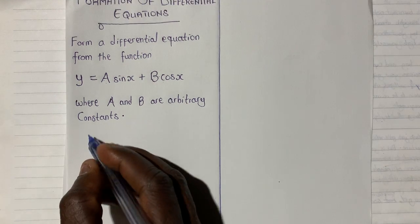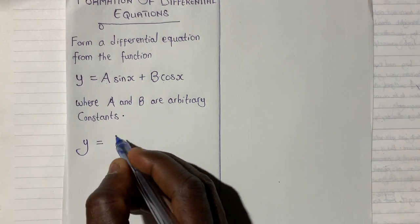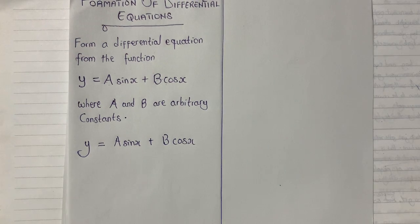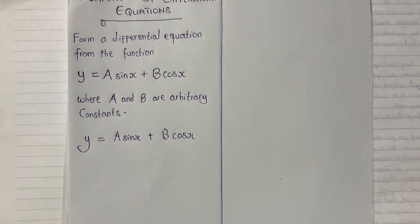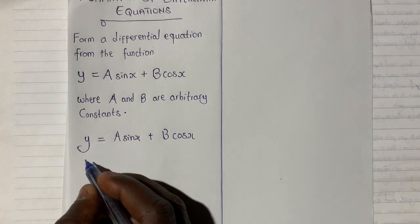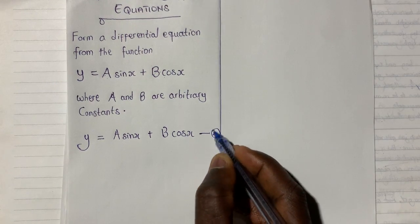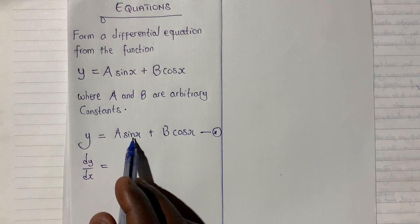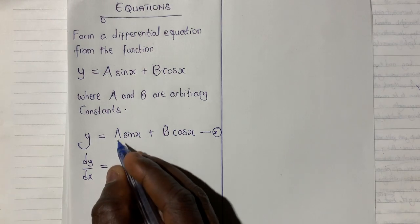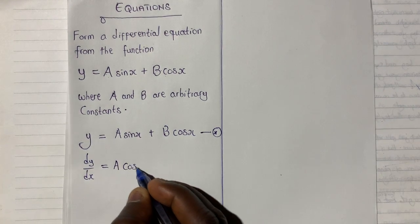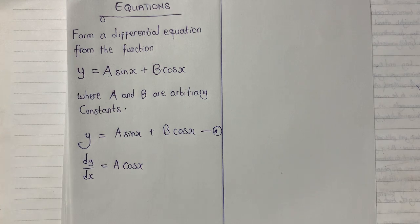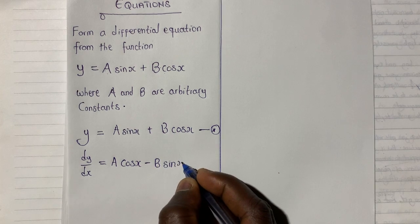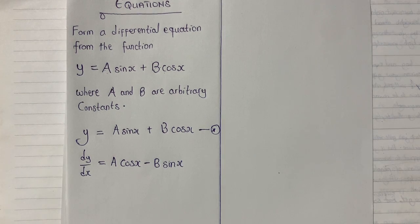The equation given to us is y equals a·sin(x) plus b·cos(x). I'll differentiate this with respect to x — let me name this equation star. So dy/dx: when I differentiate sin(x) I get cos(x), giving me a·cos(x). And when I differentiate cos, I get minus sin, so minus b·sin(x). This is the first derivative.